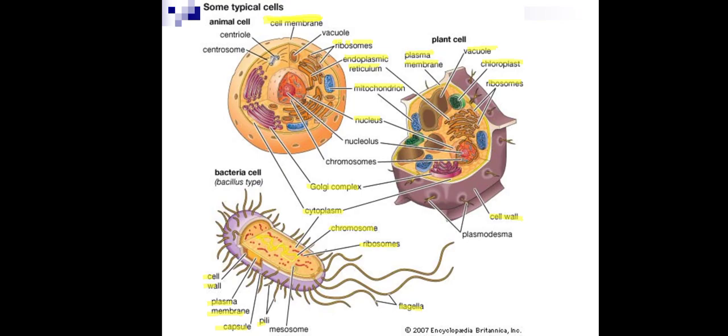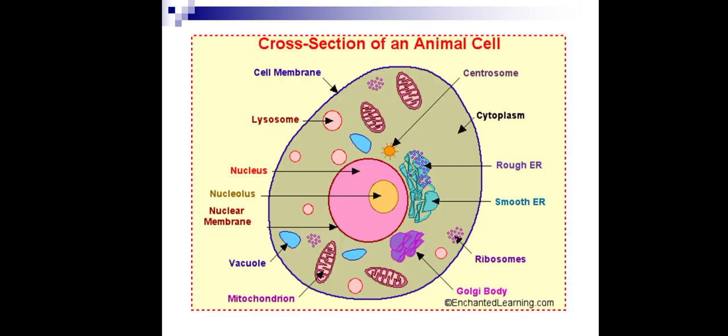There are different kinds of cells: the animal cell, the plant cell, and the bacterial cell. The first two — animal and plant — are eukaryotic cells, and the bacterial cell is the prokaryotic cell. A cross-section of an animal cell shows the nucleus, nucleolus, mitochondria, rough endoplasmic reticulum, smooth endoplasmic reticulum, Golgi apparatus or Golgi body, lysosome, and cell membrane.